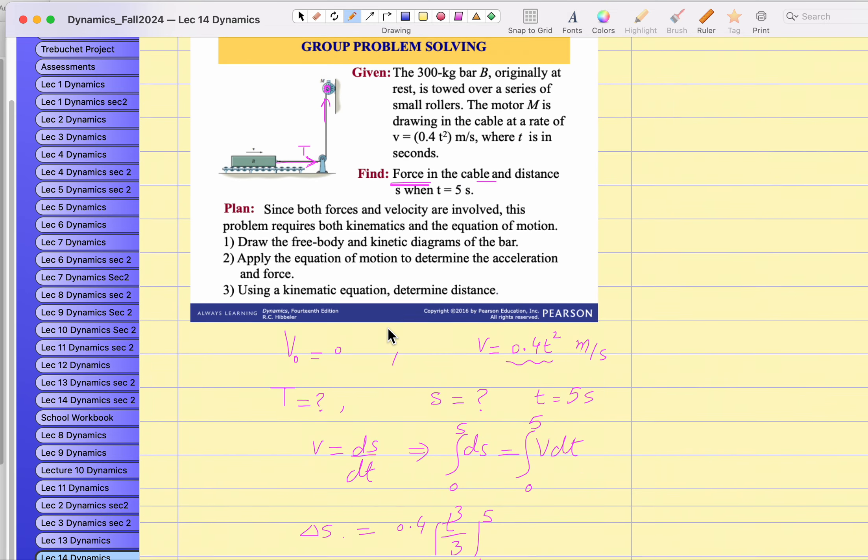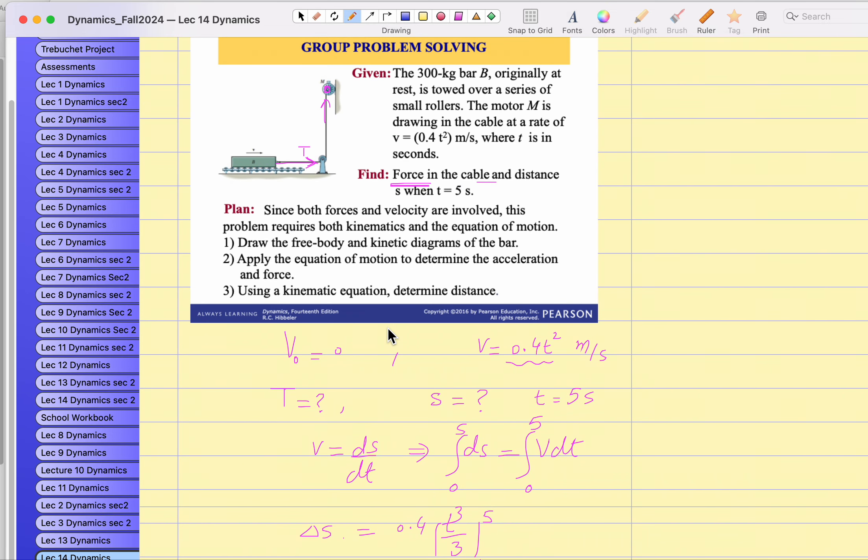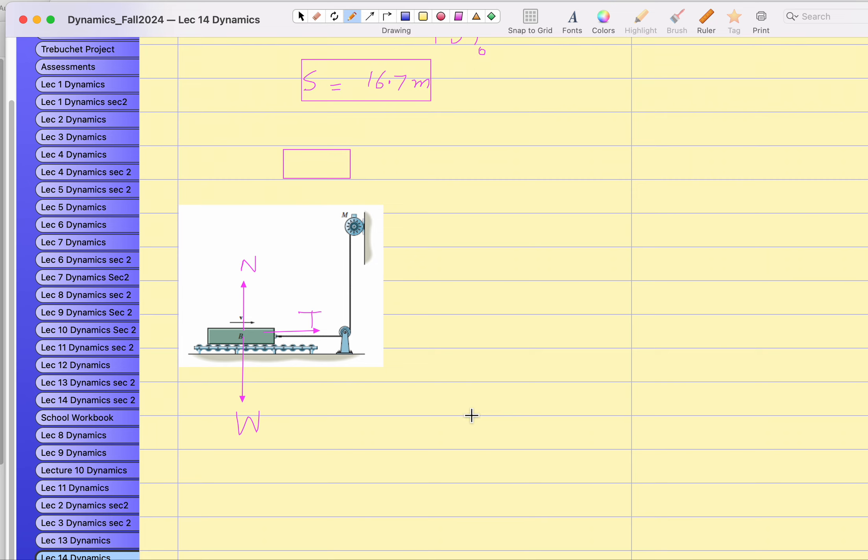So this is my force in the cable and this is my weight downward and the reaction normal reaction upward. Do we have friction? Since these are rollers, we will assume friction is negligible. So I would just use this one to find out the equation of motion. It's good practice to assume a reference axis, X axis along the path, Y axis. All the forces in the X direction are equal to mass times acceleration.